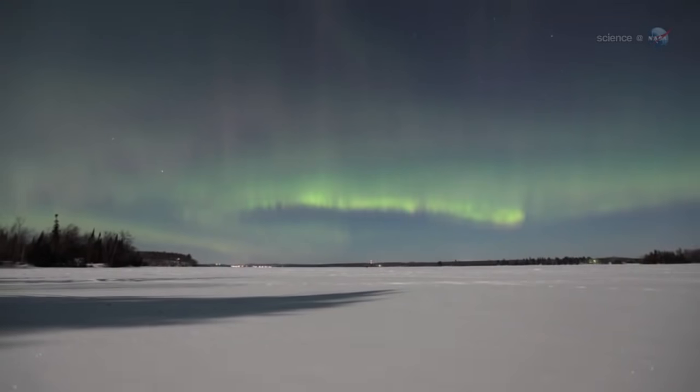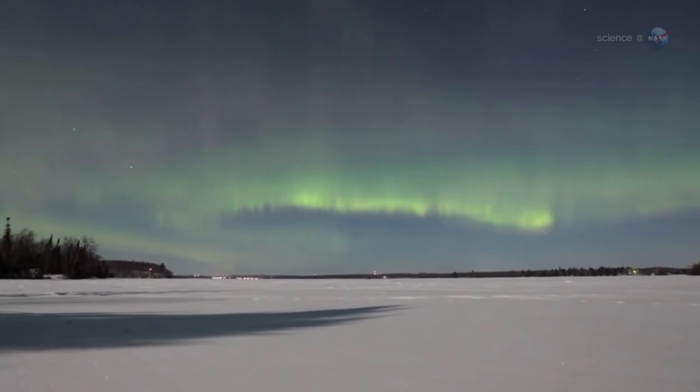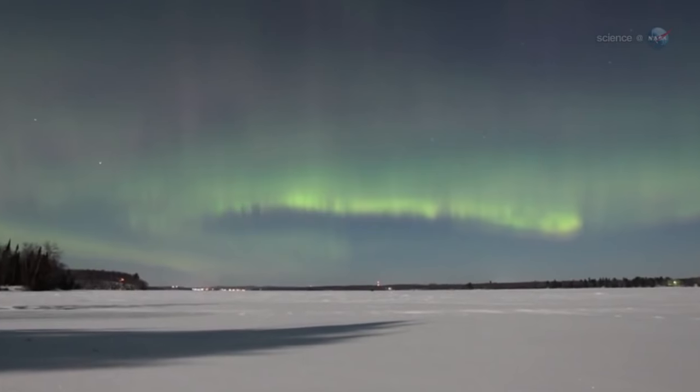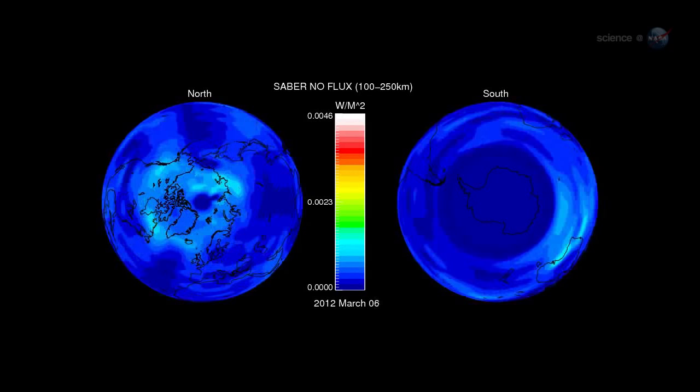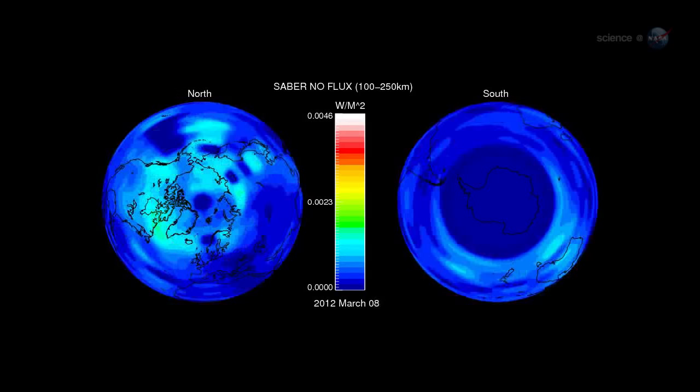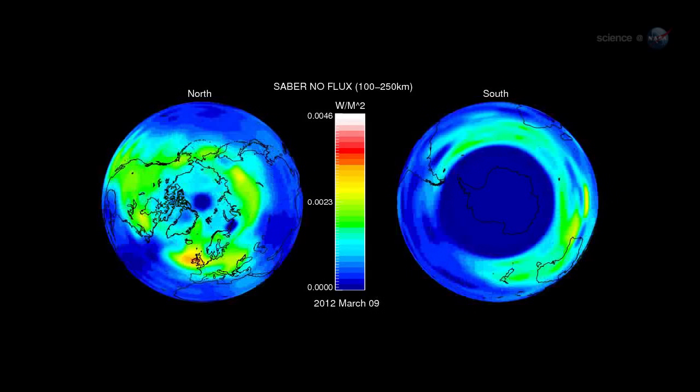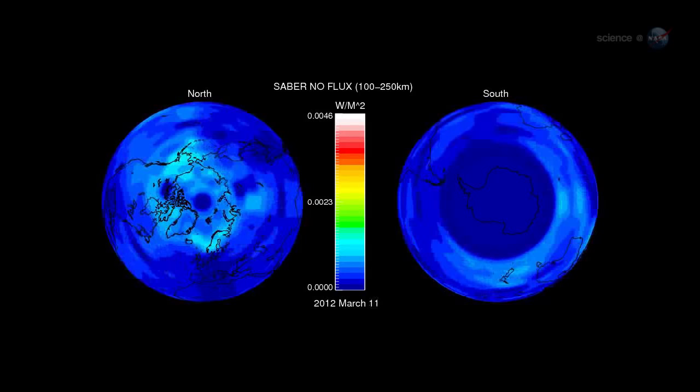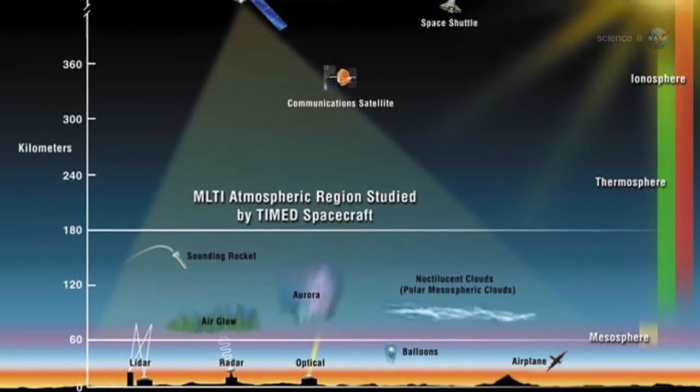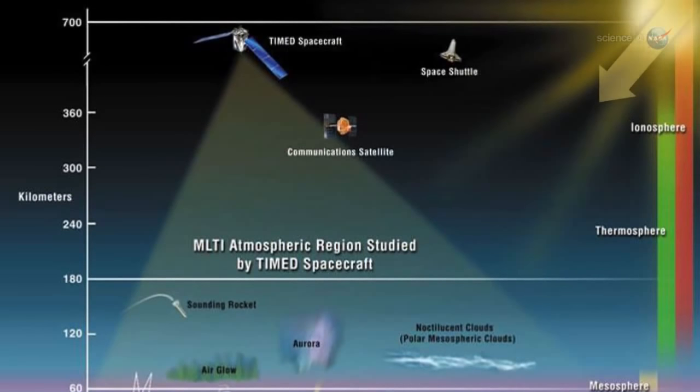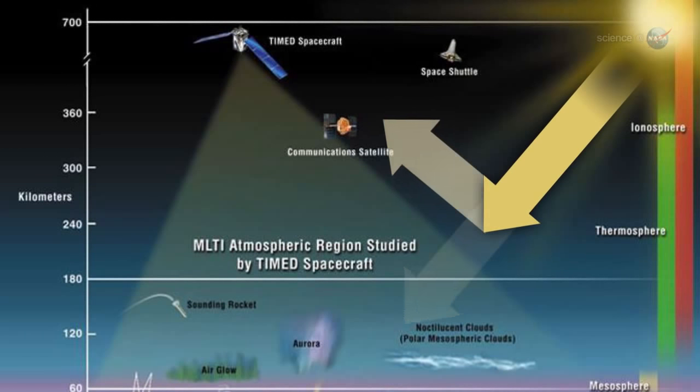The thermosphere lit up like a Christmas tree, says Russell. It began to glow intensely at infrared wavelengths as the thermostat effect kicked in. For the three-day period, March 8th through 10th, the thermosphere absorbed 26 billion kilowatt hours of energy. Infrared radiation from CO2 and NO, the two most efficient coolants in the thermosphere, re-radiated 95% of that total back into space.